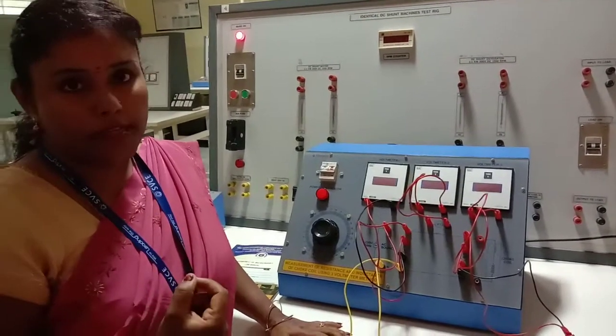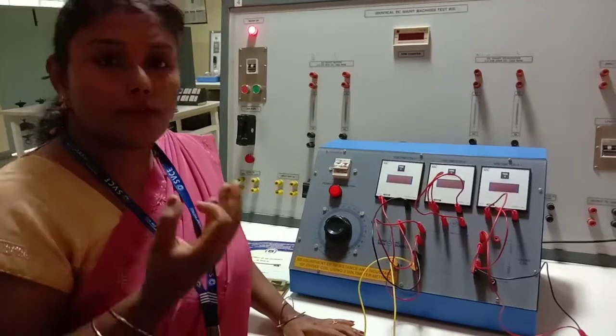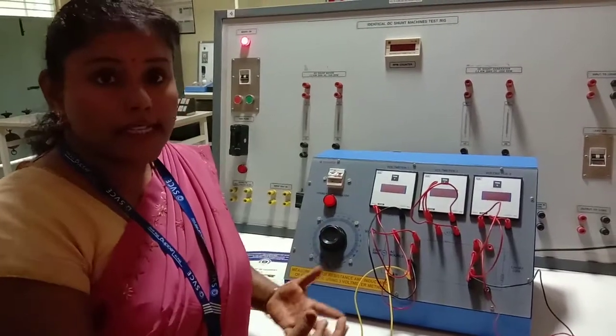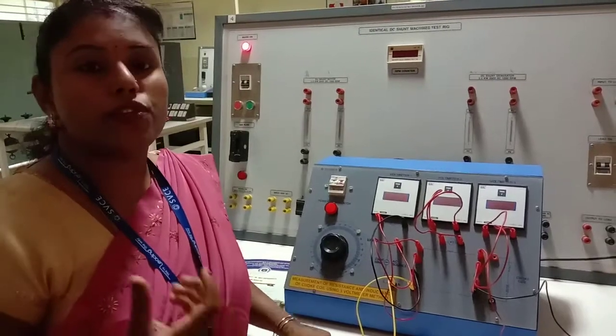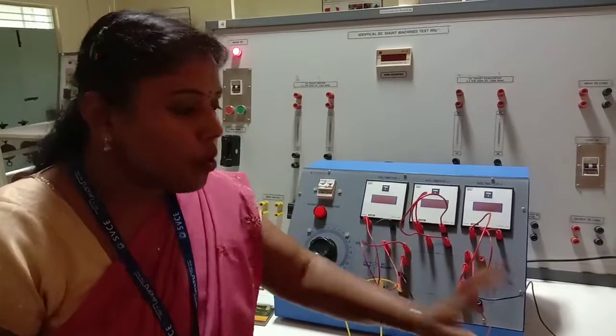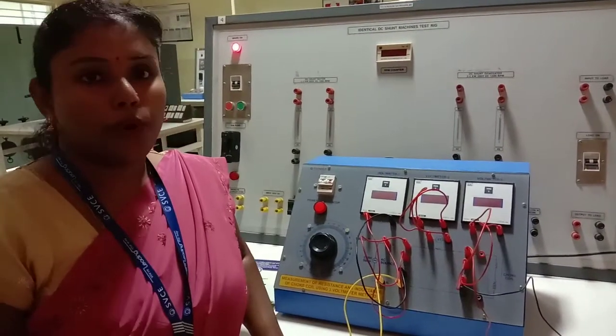So from this kind of experiment we can determine the inductive load specification. This choke coil is one of the inductive load what we are using in your daily appliances. We are using washing machine, we are using fan, we are using tube light. What type of load? Being an electrical student or being an electrical engineer, we should know what type of load and this choke coil comes in the inductive load.